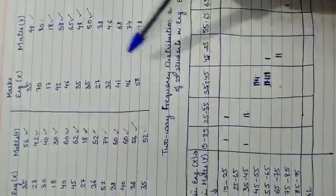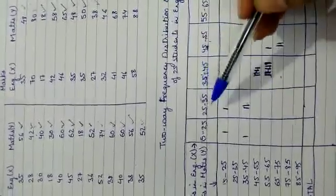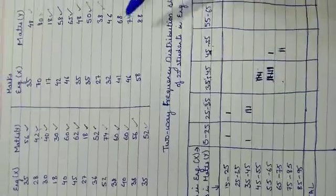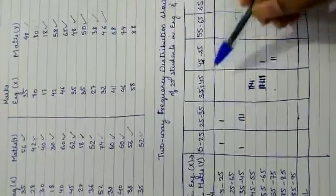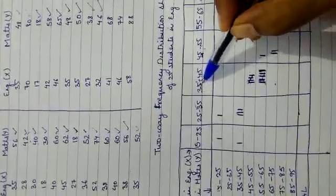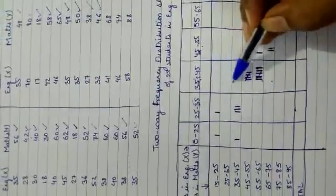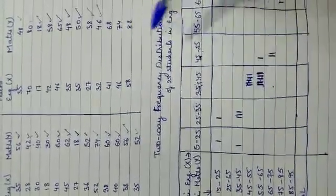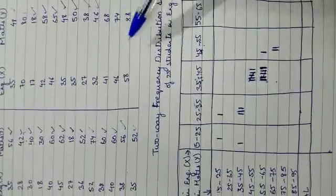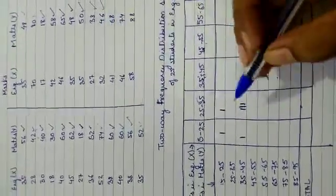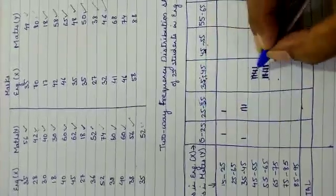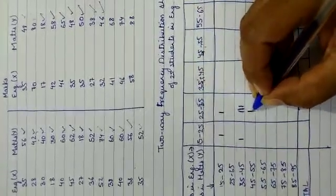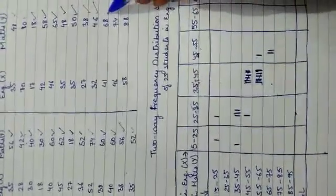Next is X=27 and Y=38: X=27 is in 25–35 and Y=38 is in 35–45, one more tally mark there. Then X=32 and Y=46: X=32 falls in 25–35 and Y=46 falls in 45–55, so the tally mark goes in that cell.